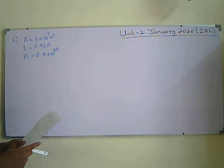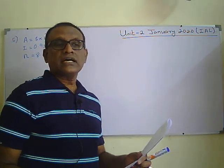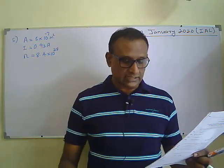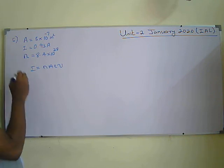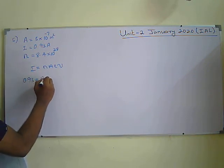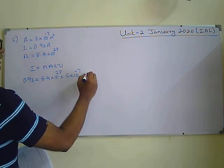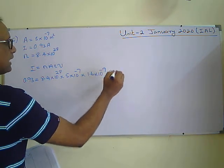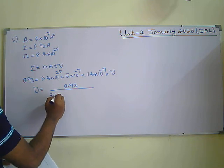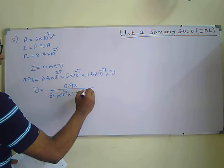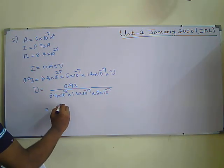Question five gives data about a copper wire: cross-sectional area, current flow, and charge carrier density. To find the drift speed, use I = nAev. Here I = 0.93 A, n = 8.4 × 10²⁸ m⁻³, A = 5 × 10⁻⁷ m², and e = 1.6 × 10⁻¹⁹ C from the data sheet. Rearranging for v gives v = 0.93 / (8.4 × 10²⁸ × 1.6 × 10⁻¹⁹ × 5 × 10⁻⁷). The correct answer is D.